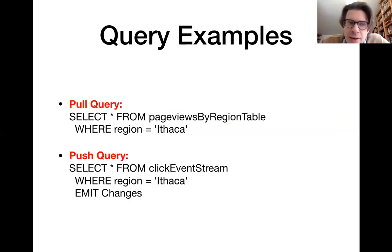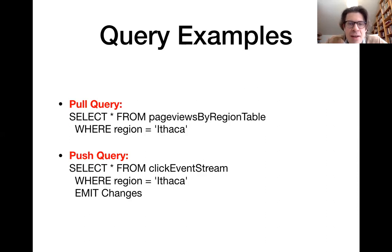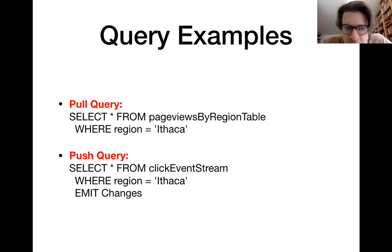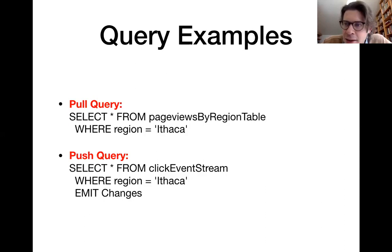You can query streams and tables using SQL-like syntax. For a pull query, you might retrieve the current number of page views by region from a table, restricted to the Ithaca region. For a push query, you could define it on a click event stream and emit changes whenever there's an update matching a specific region key. The EMIT CHANGES clause identifies a push query—it continuously emits all updates to the stream.